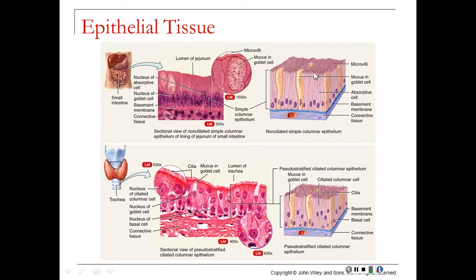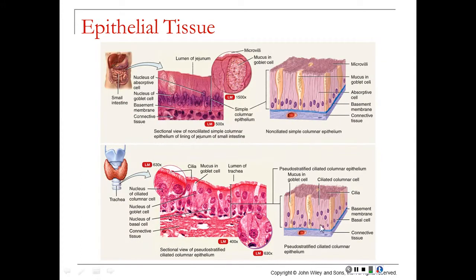Columnar cells line most of our digestive tract. The fuzzy-looking area visible in the image represents microvilli — finger-like projections that increase surface area for absorption in the small intestine. Within the respiratory tract, cilia line the tissue to trap mucus and debris before they reach the lungs. This tissue is called pseudo-stratified ciliated columnar epithelium — pseudo-stratified because the staggered nuclei make it look like multiple layers, but it is actually just one cell layer thick.